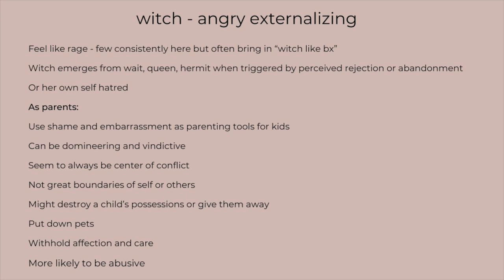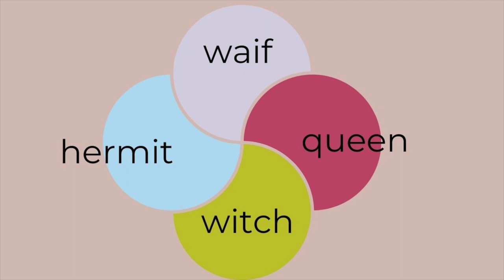The witch, as Christine Lawson describes, is not necessarily one type so much as an exacerbation of the other types when unhappy or enraged in a more externalizing way. This is the more hardcore BPD symptomatology — the intention is to wound and hurt, there's not a lot of self-control, and you'll find more classic hurtful behaviors directed outward. You'll often find a lot of conflict, vindictiveness, and domineering behavior, and this type often uses shame and embarrassment as parenting tools.